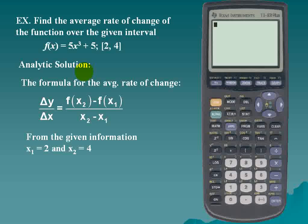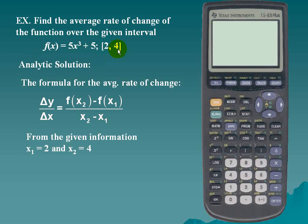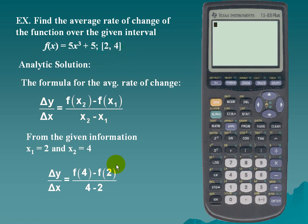From the given information, we see that x₁ is 2 and x₂ is 4. If we substitute the given information into our average rate of change formula, we see that Δy/Δx is f(4) - f(2) all over 4 - 2.